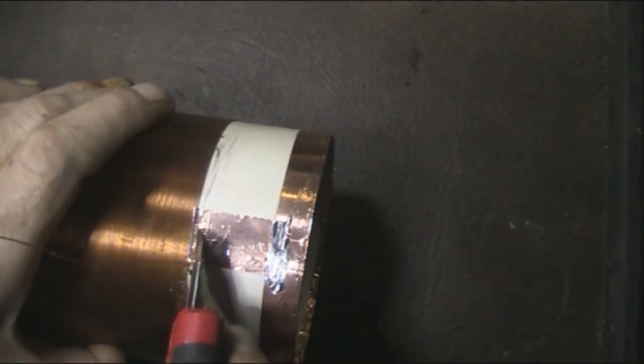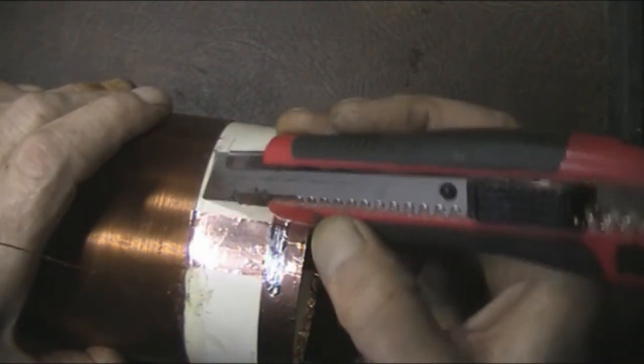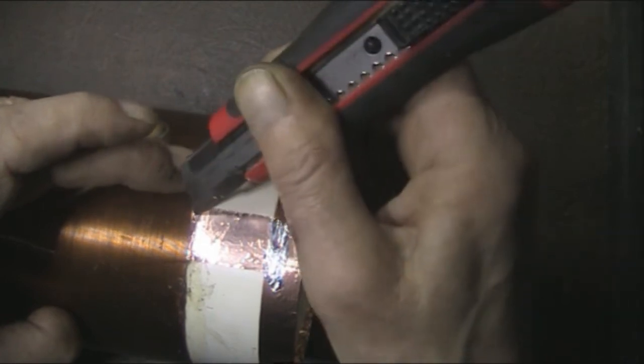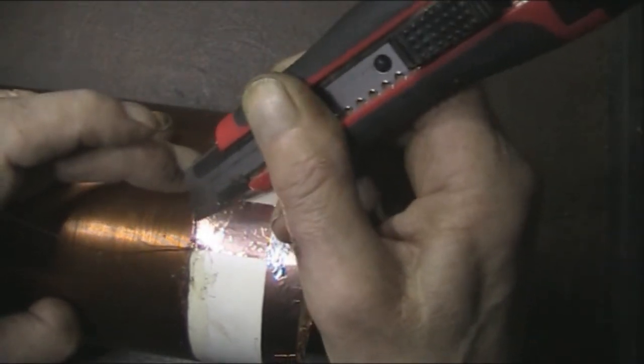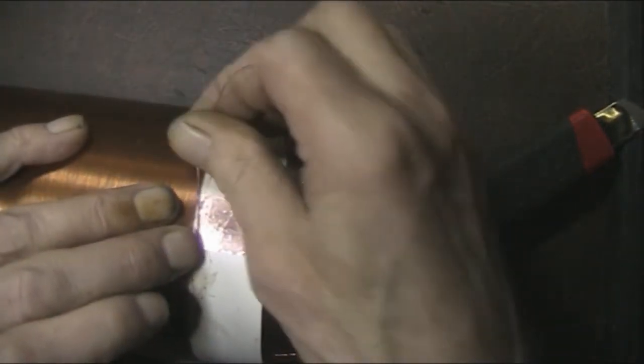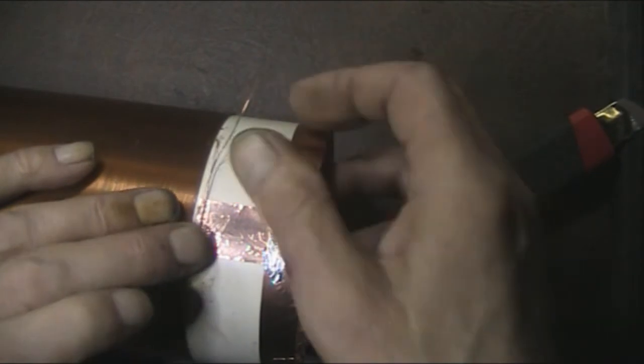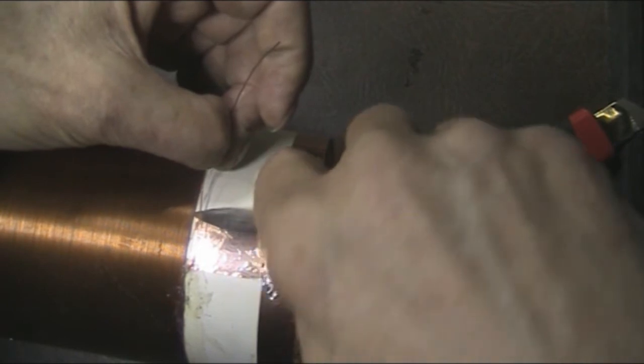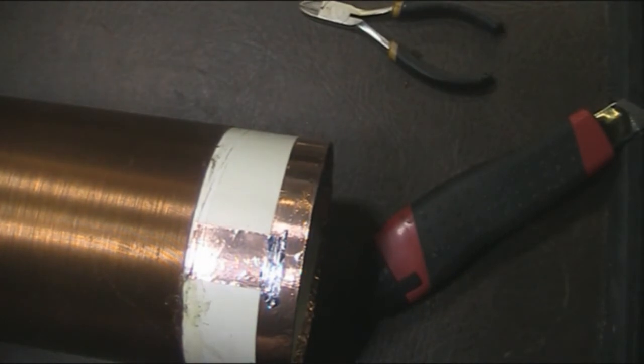Just tidy up that end so it looks a bit nicer. Just cut through. Then just lay your copper wire across the bottom of the strip.